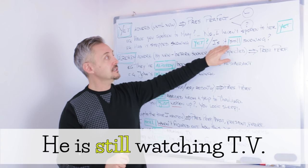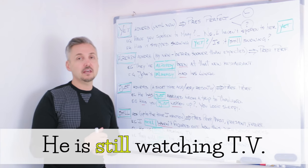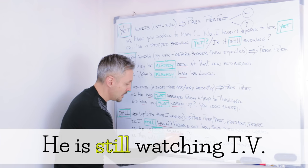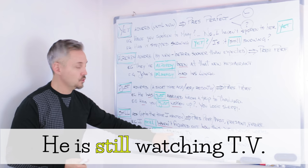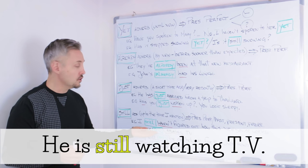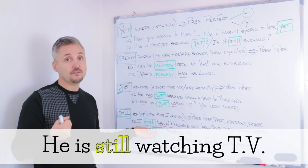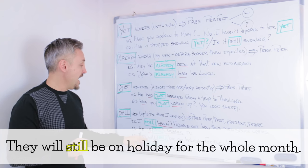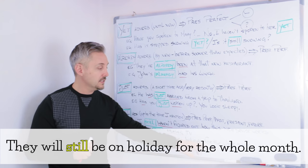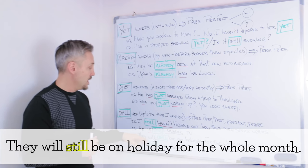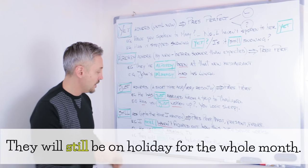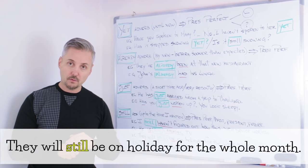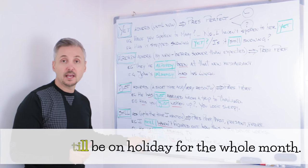He is still watching TV. This is the same as, it is still snowing, is the Present Continuous. So, look at still. Still is placed before the main verb. So, watch it. To watch. So, it's normal. It's a normal adverb, before the main verb. Take a look at the third one. They will still be on holiday for the whole month. They will still be on holiday for the whole month. Again, it's placed before the verb to be. Before the main verb, in this case. Because will is the auxiliary.